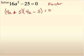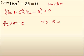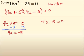Now, we can use our zero product property and set each one equal to zero. So, I am going to subtract 5 from both sides, and that gives me 4a equal to negative 5. Divide both sides by 4, and I get a equal to negative 5 fourths.